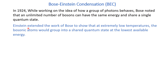Bosonic atoms are atoms which have integral spin — for example, atoms with spin zero, one, two, and three are all bosonic atoms — while fermionic atoms are those atoms which have spin equal to one-half, three-half, five-half, and so on. For example, hydrogen has a spin of one-half so it is a fermionic atom, while helium has a spin of zero so it is a bosonic atom.